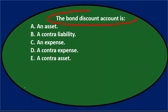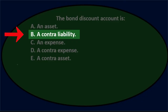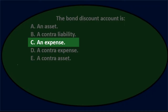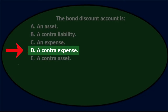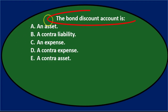Next question: the bond discount is — A) an asset, B) a contra liability, C) an expense, D) a contra expense, or E) a contra asset. Let's go through each option.